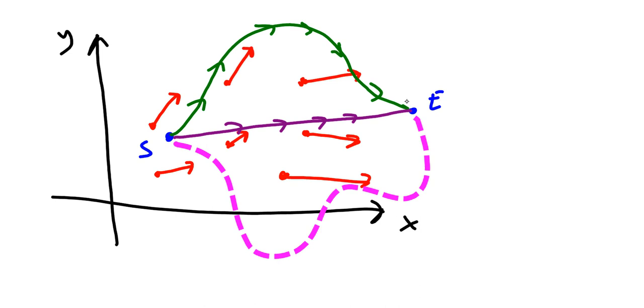If the vector field we're moving through is conservative, then that means that vector field is path independent. So if you took the green path, or if you took the purple path in the middle, or you took this purple dotted path, it wouldn't matter.